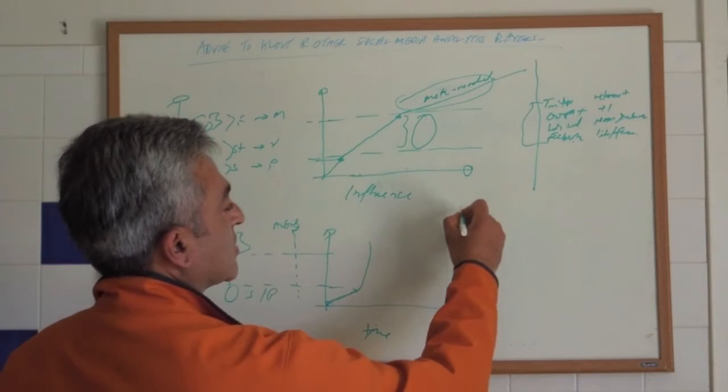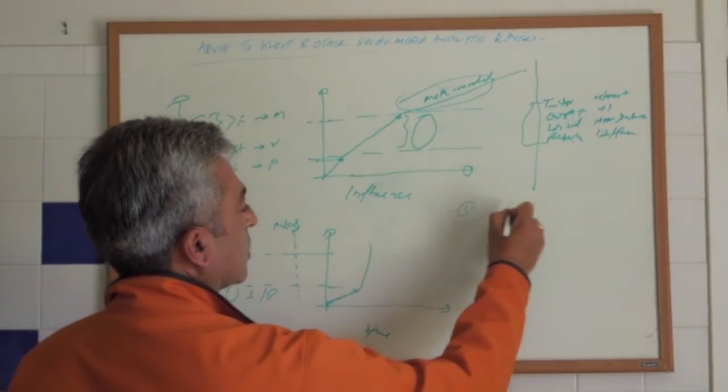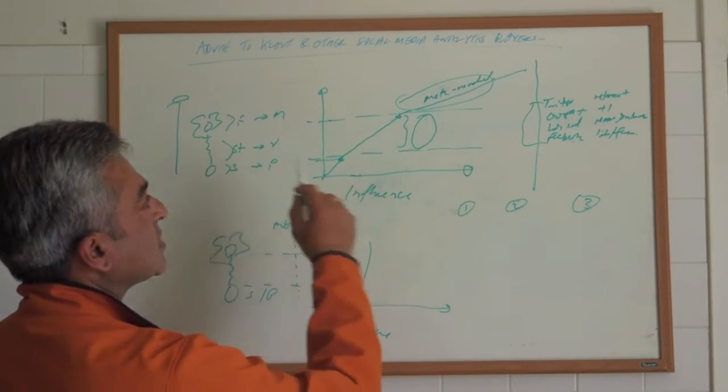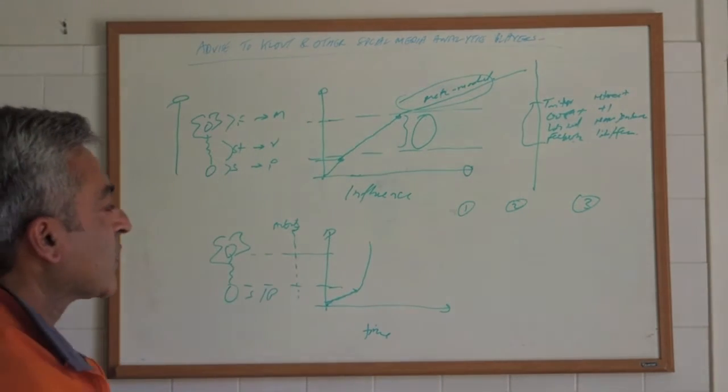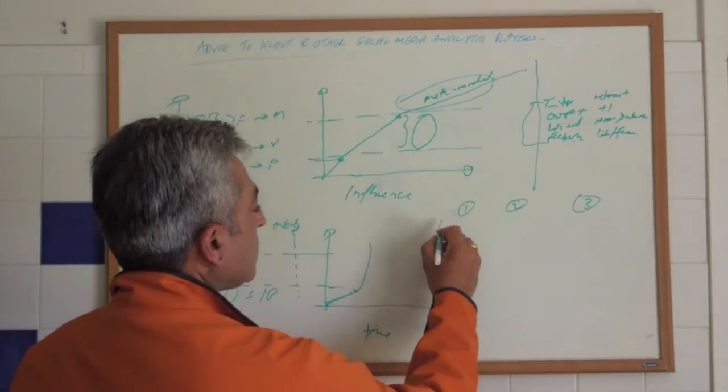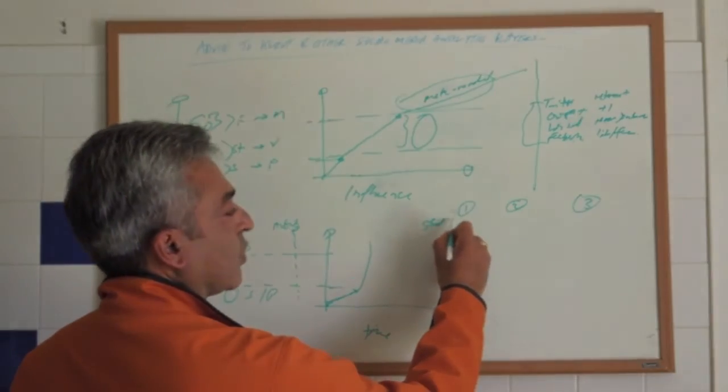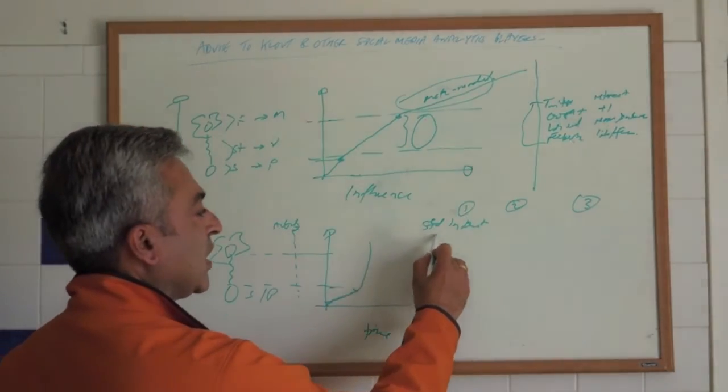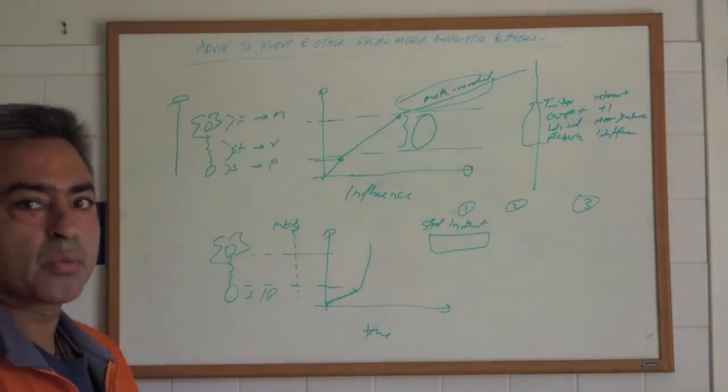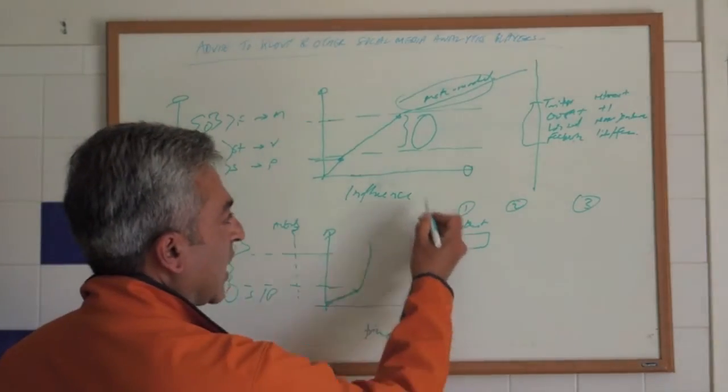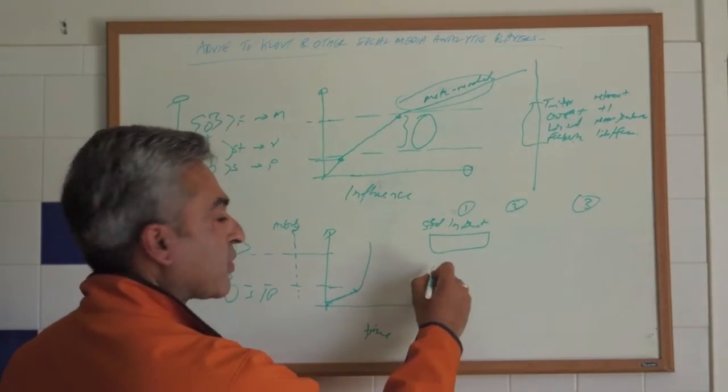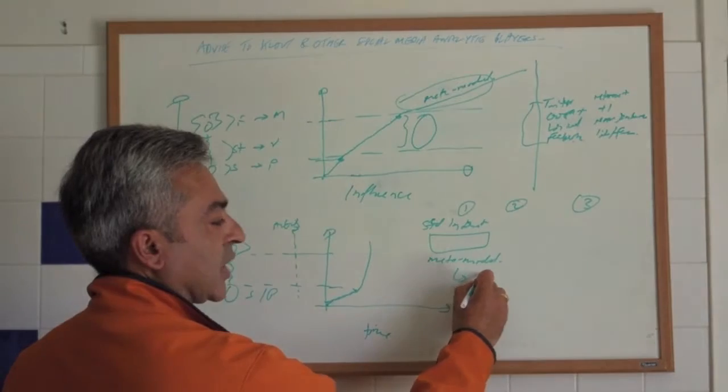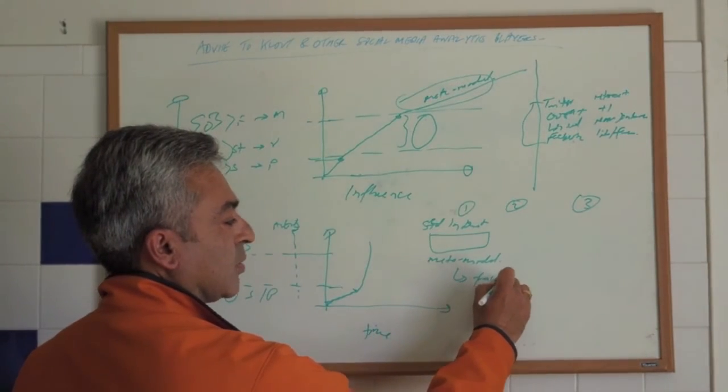So my advice is really threefold, and I'd say that as number one, what I would advise Klout and other social media analytics players is to push standards for internet, whereby there's a layer of meaning superimposed upon the way the internet works. And this can be done precisely by establishing norms for meta modeling. And what I talked about earlier is in fact some kind of a fractal based meta model.